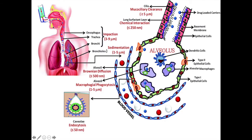The diagram shows an alveolus highlighting the size of particles and the mechanisms by which they are normally deposited and cleared. In most cases, particles that end up here are less than five microns and can settle by sedimentation or simple Brownian diffusion. They will be cleared by mucociliary clearance and phagocytosis by macrophages, and in some cases by chemical interaction.